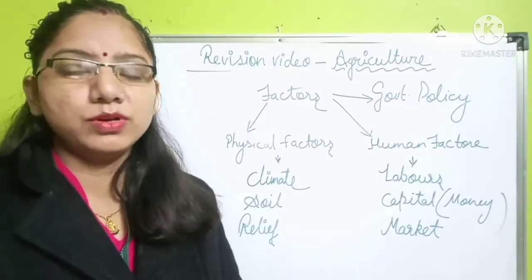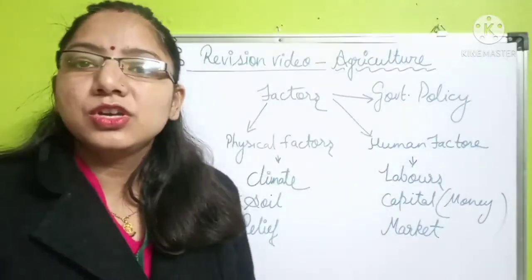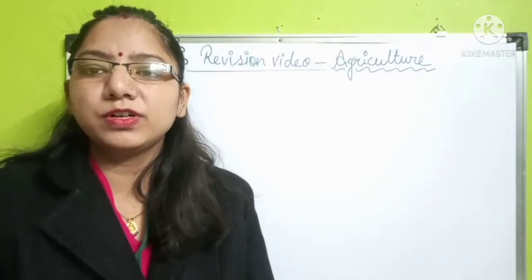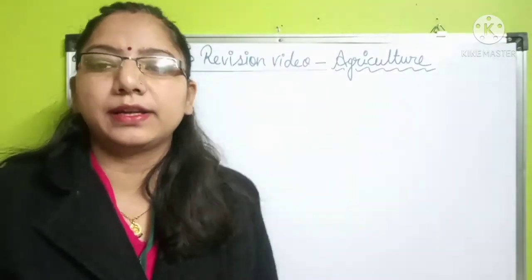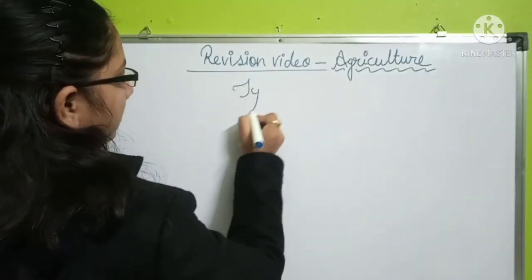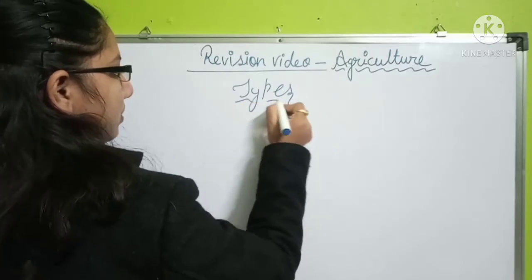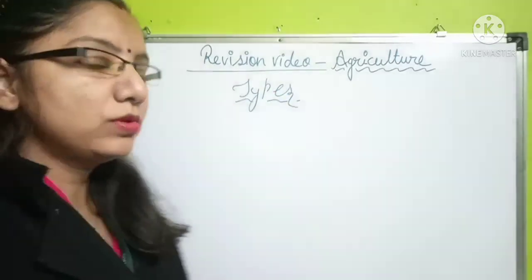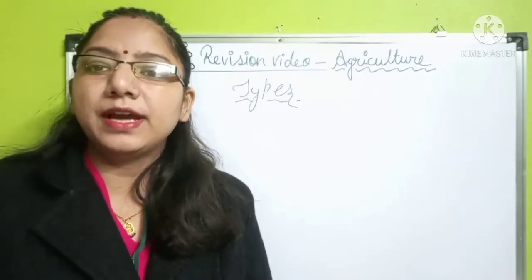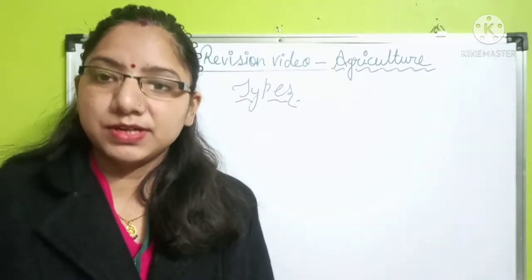Moving forward to the types of agriculture — agriculture can generally be divided into two types: subsistence agriculture and commercial agriculture.